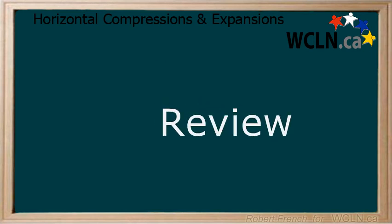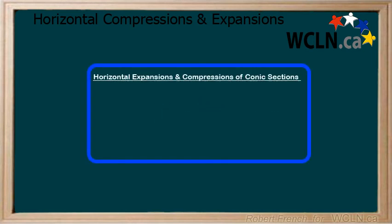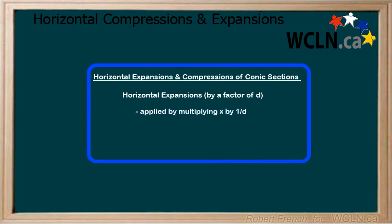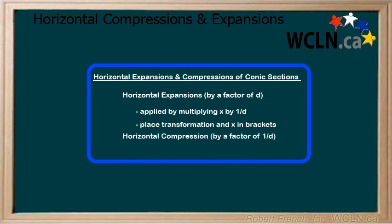In this lesson, you learned about horizontal compressions and expansions of conic sections. For a horizontal expansion by a factor of d, you multiply x by 1 over d, remembering to put the factor being multiplied and x in brackets. You also learned that for a horizontal compression by a factor of 1 over d, you multiply x by d. These rules apply to all conic sections.